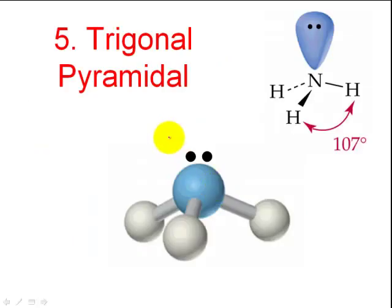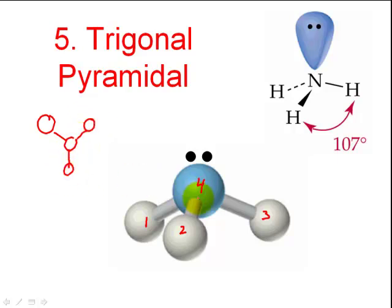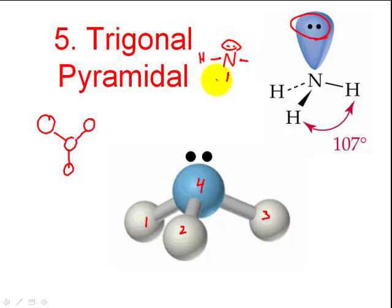Trigonal pyramidal is another shape. Any time I have four total atoms, I have two options: trigonal planar — which is a flattened version — or trigonal pyramidal. This is NH3. NH3 actually has an extra pair of electrons on top because nitrogen has five electrons. Any time nitrogen bonds, it forms three bonds and has one unshared pair of electrons. That one unshared pair repels the structure downward into this pyramid-style shape.